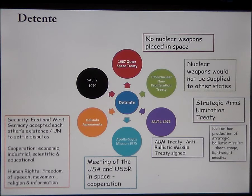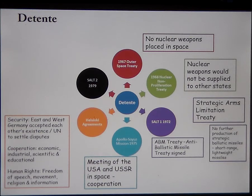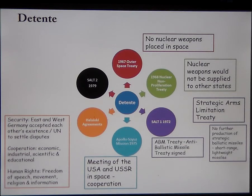On human rights, there should be respect for freedom of speech, movement, religion, and information. This was stabilising the situation — greater cooperation should limit the possibility of conflict. Unfortunately, many countries were aware that the USSR wasn't honouring many of these agreements, particularly regarding freedom of speech and religion, but it had brought a degree of stability to the relationship.